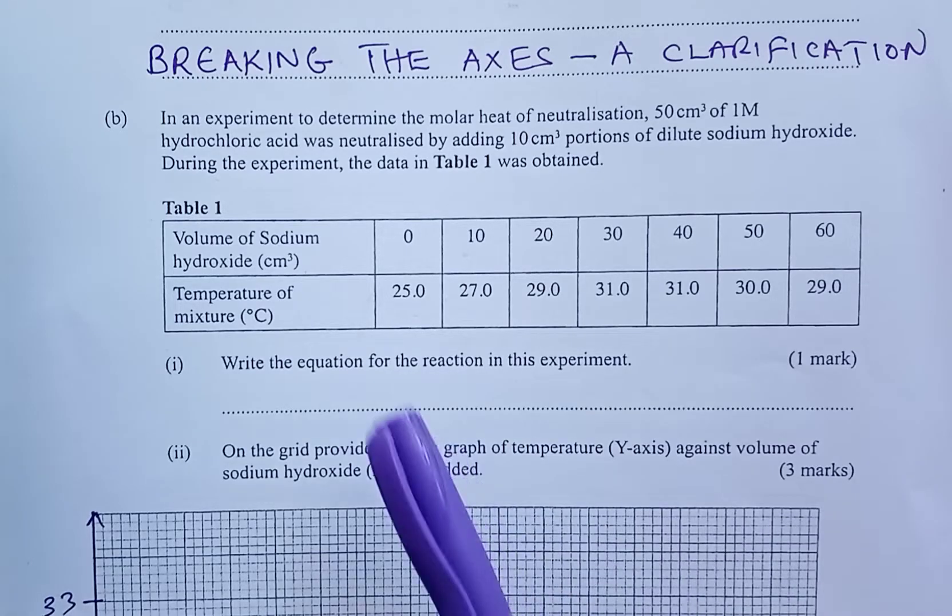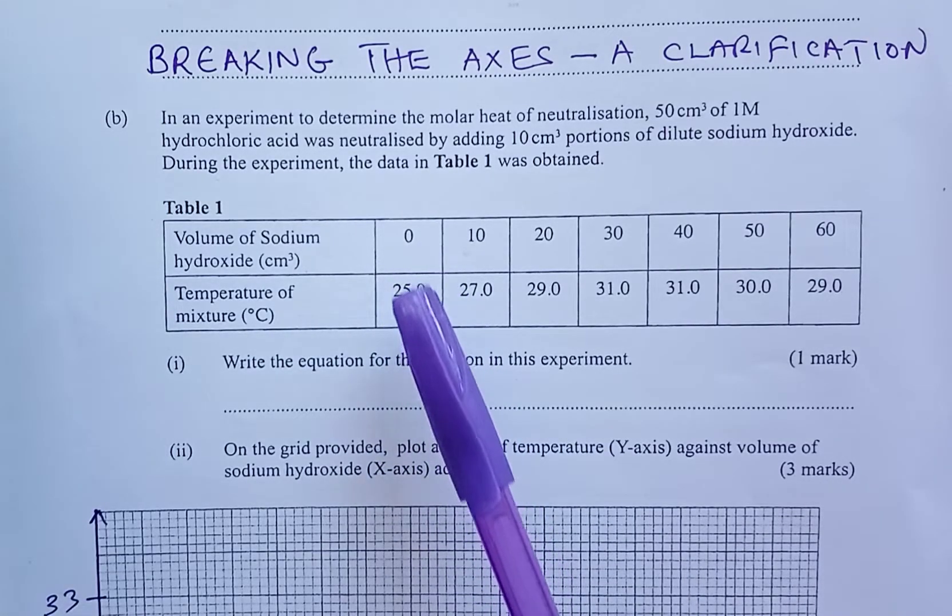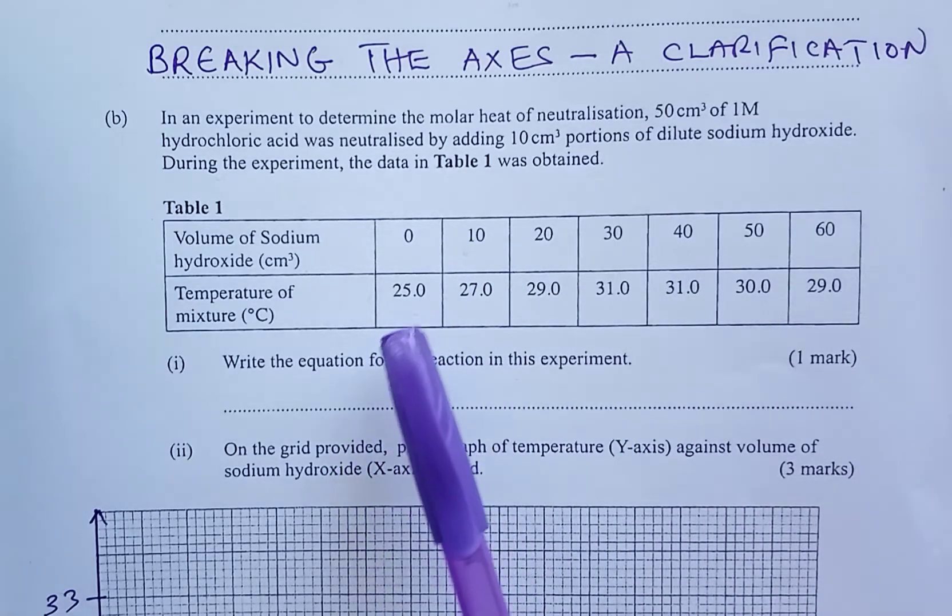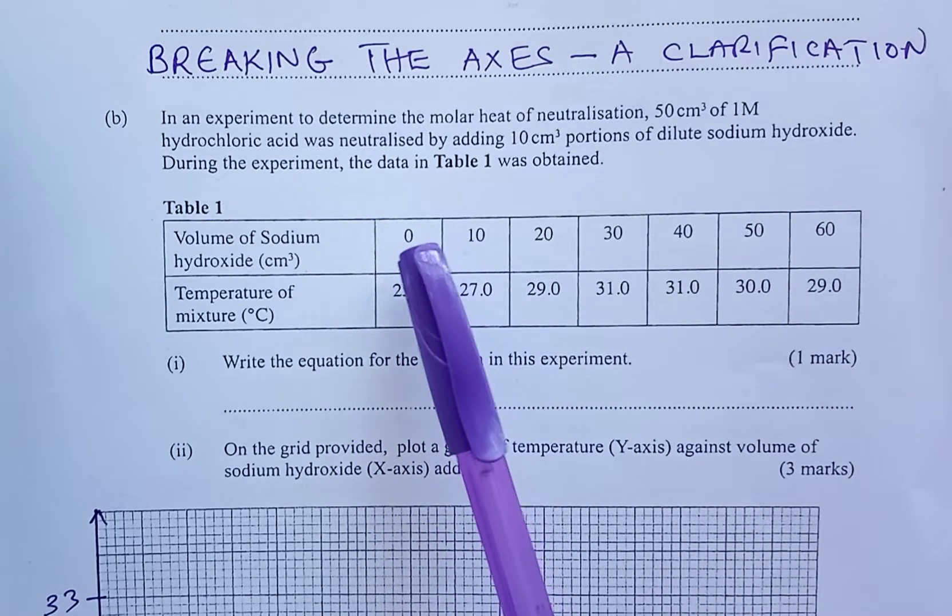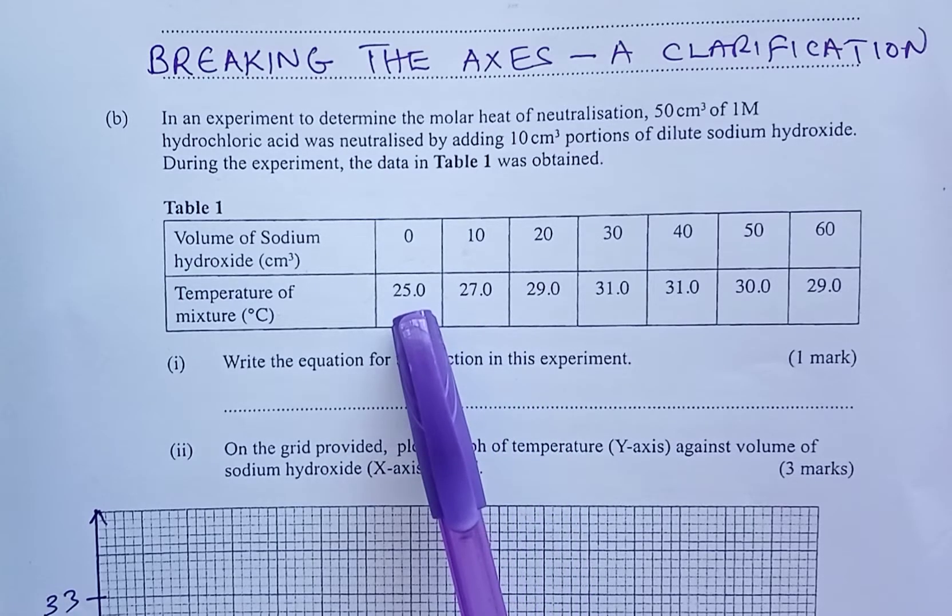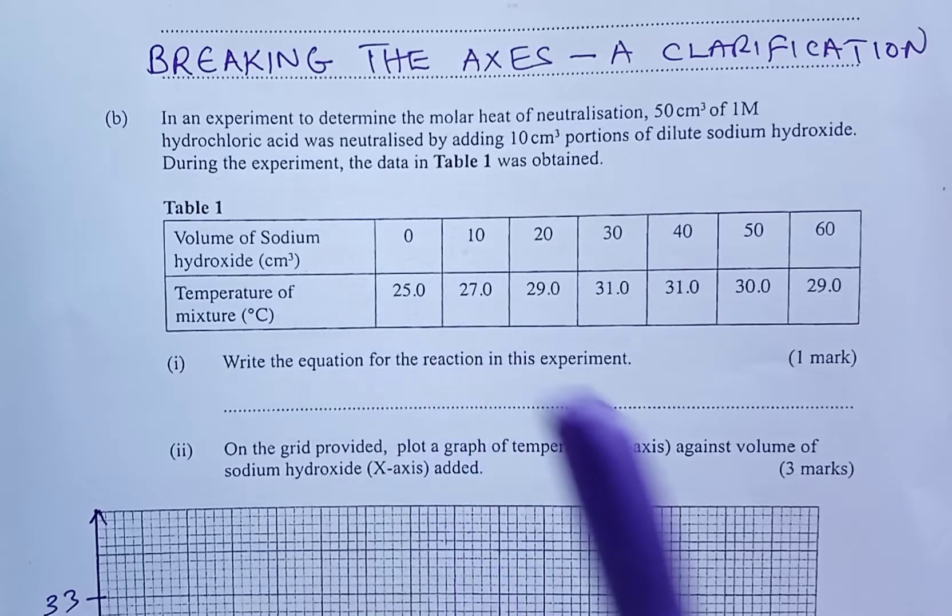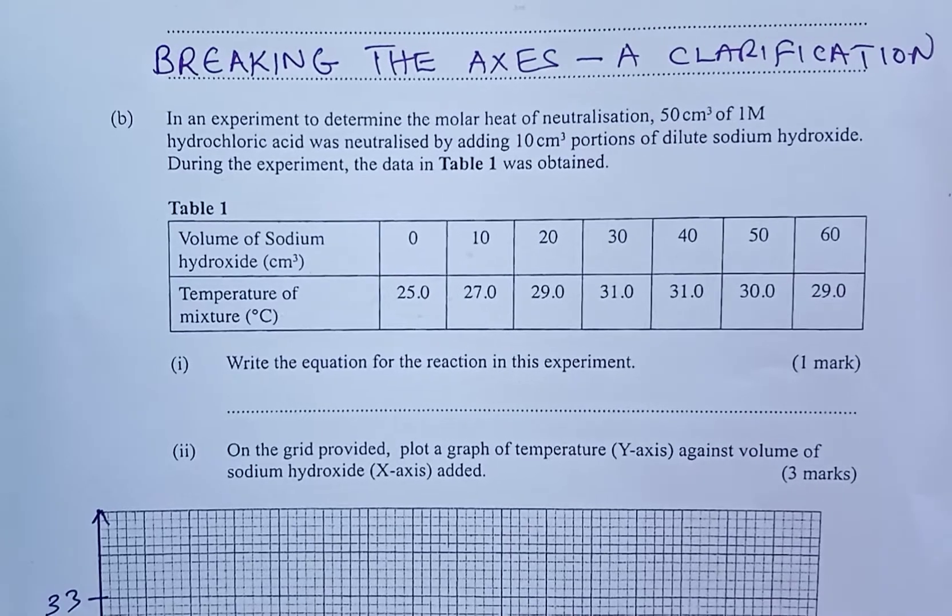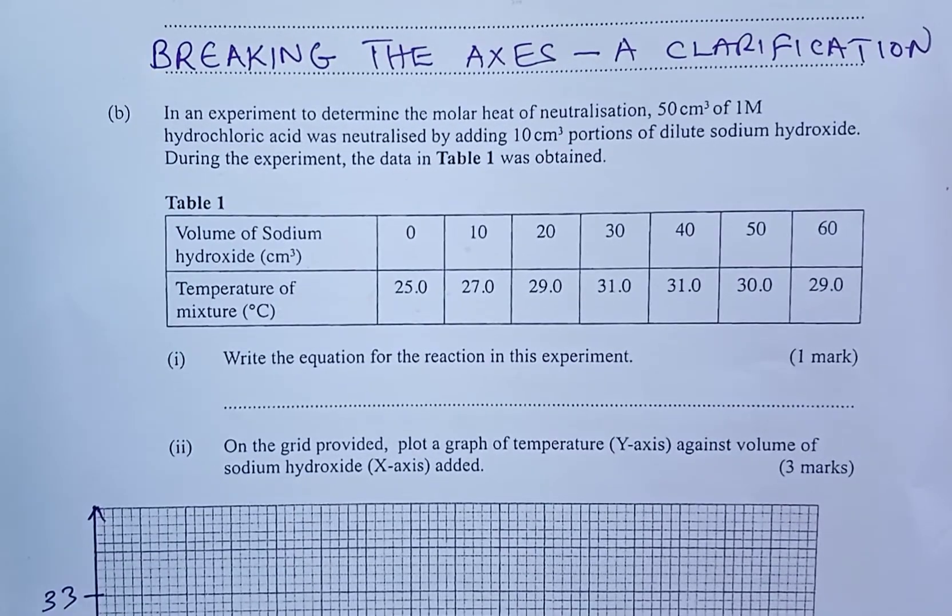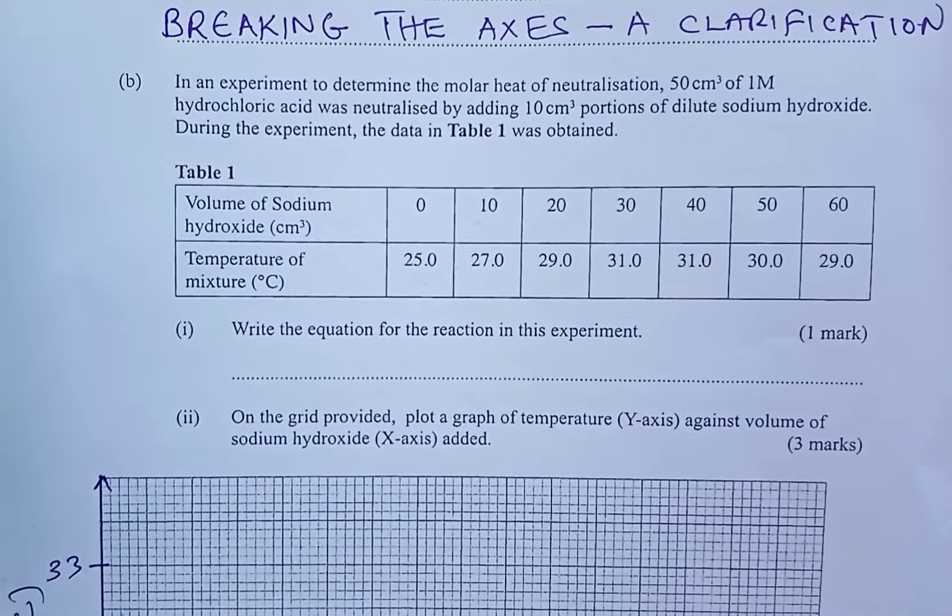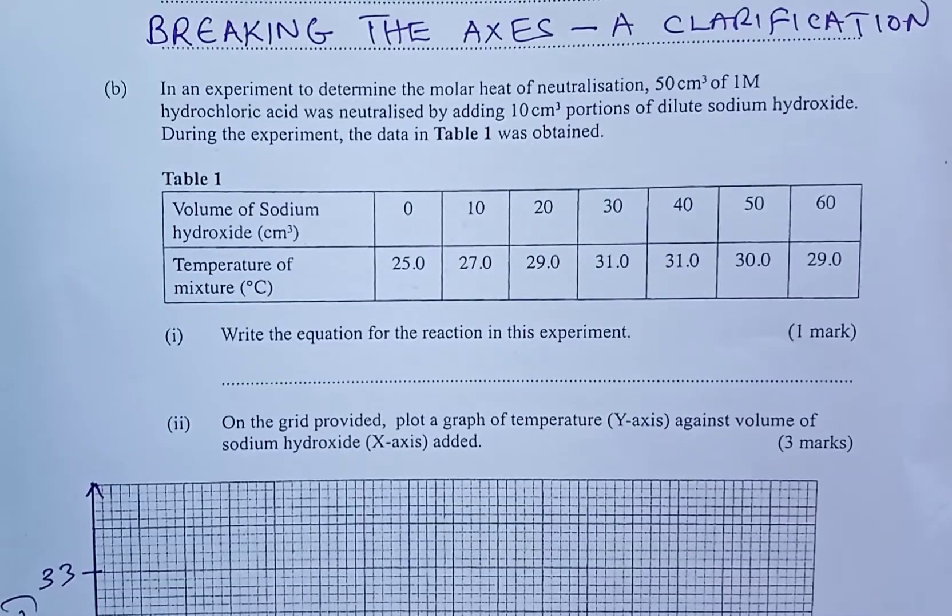Remember the x-axis is not supposed to be broken because it starts at 0. When your values start at 0 you do not have to break your graph. But look at temperature which was supposed to be plotted along the y-axis. The least value we have here is 25. So if you have to start the axis at 0 your graph is going to be a hanging graph.